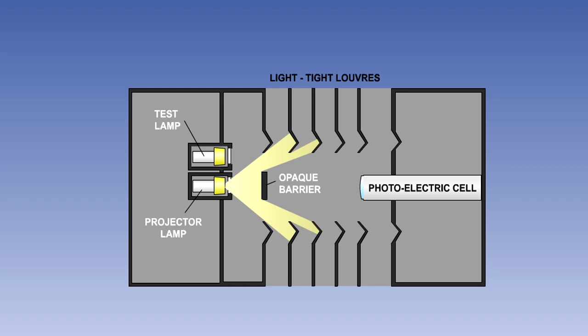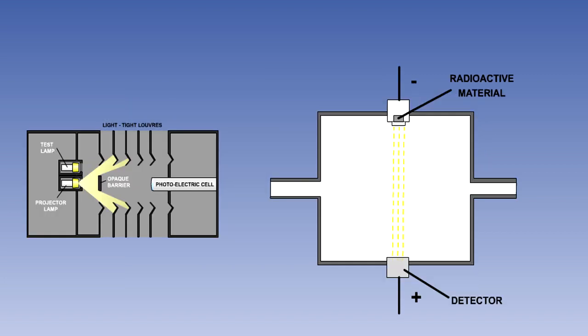Smoke detection sensors operate on one of two principles. They are either optical, using light sensors, or ionising, utilising a small amount of radioactive material.